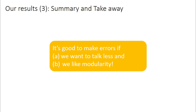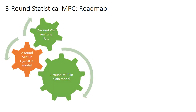In summary, it is good to make errors — if we want to talk less, have less interaction, and we would like modularity. In the remaining part of the talk, I'm going to elaborate on our three-round statistical MPC protocol. Our three-round statistical MPC consists of two building blocks: a two-round MPC in the F-VSS CIFAR model and a two-round VSS realizing the F-VSS functionality. Put together, we obtain our three-round MPC. For the rest of the talk, we focus on the two-round MPC in the CIFAR model.